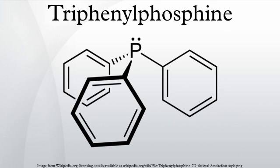In contrast, PdCl2(PPh3)2 is square planar. Stryker's reagent, [(PPh3)CuH]6, is a PPh3-stabilized transition metal hydride cluster used as a reagent for conjugate reductions.